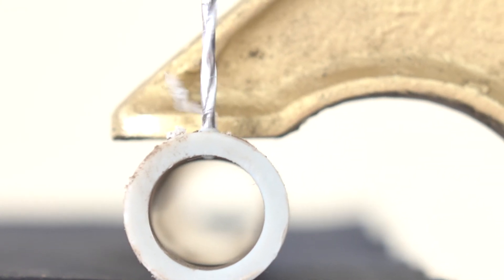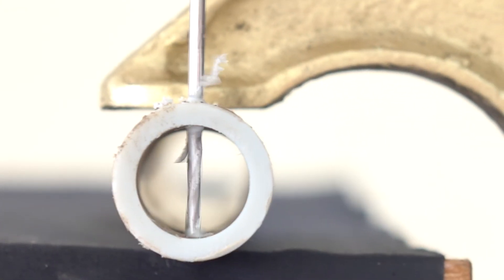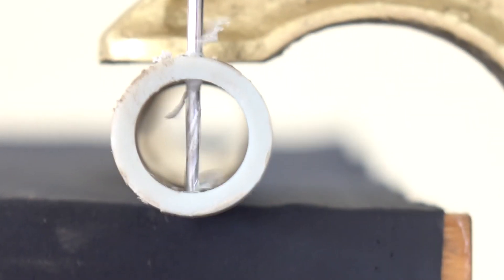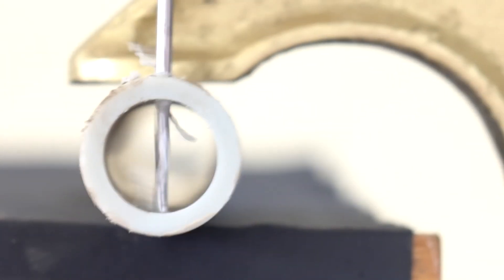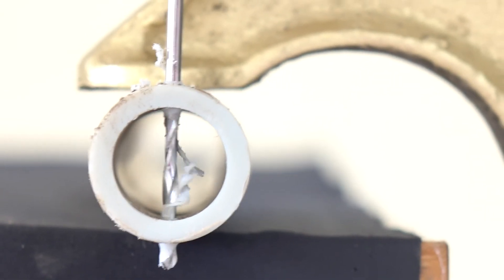Once through the first cortex, you will see that the drill will pass quickly through the intramedullary canal and then engage the far cortex. As you drill through the far cortex, the drill will again give when it clears the far cortex.